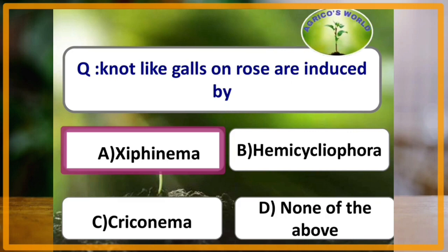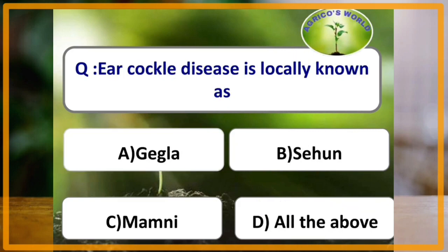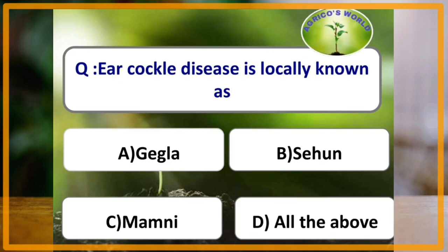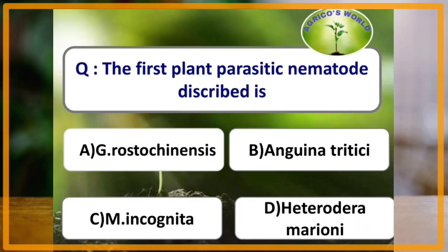Ear cockle disease of wheat is locally known as Gegla, Sehun, and Mamni. The first plant parasitic nematode described is Anguina tritici.